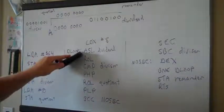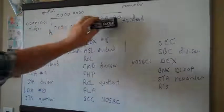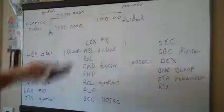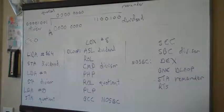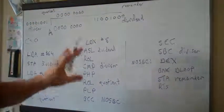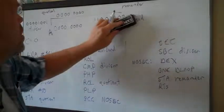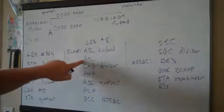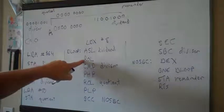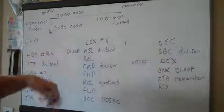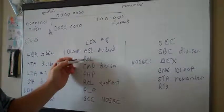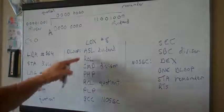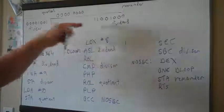Now we start the loop. The first thing to do is shift the dividend value left using ASL. When you shift left, you drop the top bit off into the carry flag and pull a zero in at the right end. Then we rotate the accumulator left using ROL. Unlike an arithmetic shift left, a rotate pulls in the carry flag at the other end rather than just a zero. So we rotate the accumulator left, pulling in the carry flag — in this case, we're just left with zero again.